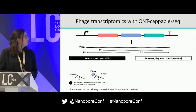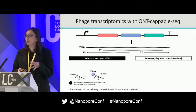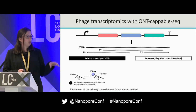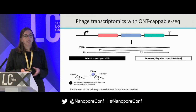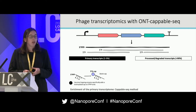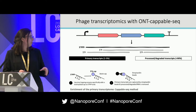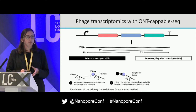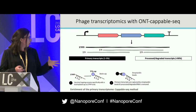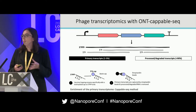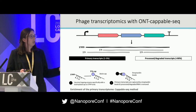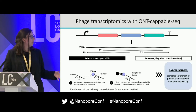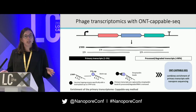We did this using the CAPSEQ method. Primary transcripts all have a triphosphate group at their 5' end, and this triphosphate group can be capped with a biotinyl-ADP tag using a capping enzyme, which allows us to specifically capture the primary transcripts with streptavidin beads. We then combined this enrichment procedure with the nanopore sequencing platform, which allows us to sequence these primary transcripts in full length and read out transcription initiation sites, termination sites, and operon structures all in one shot.